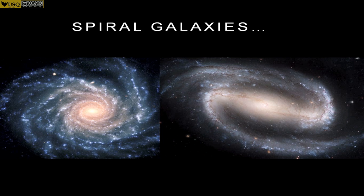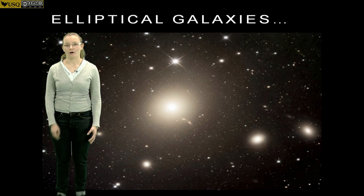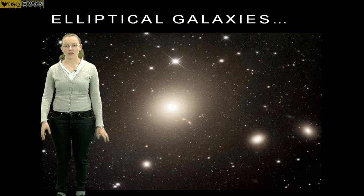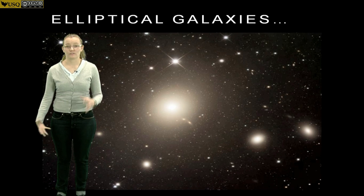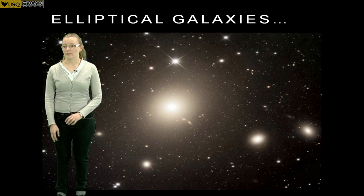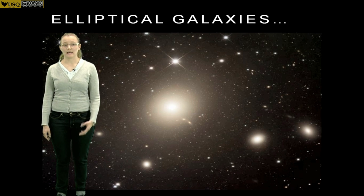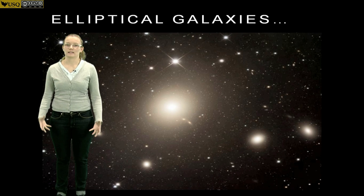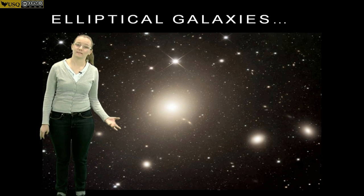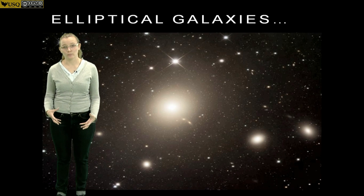Next we come to ellipticals. These are the most visually boring of the galaxies. They're blobby, they're football shaped, they're spherical, and there's no dust in them. There's no star formation happening, unlike in spirals where there's lots of star formation. These ones are just stars — nothing's being made, they're just chilling there, living out their life in a giant blob.